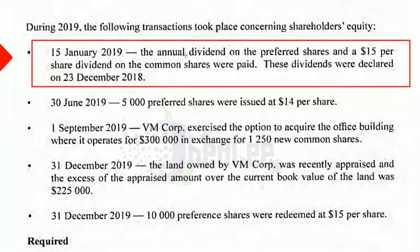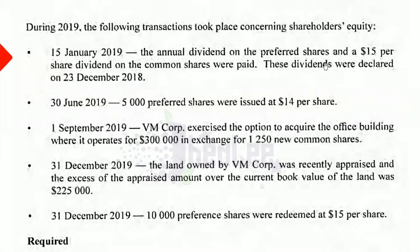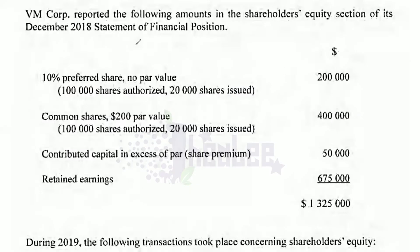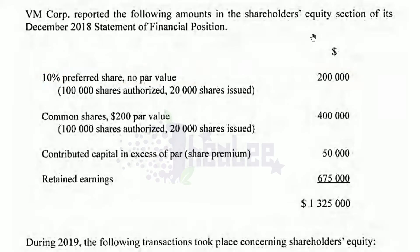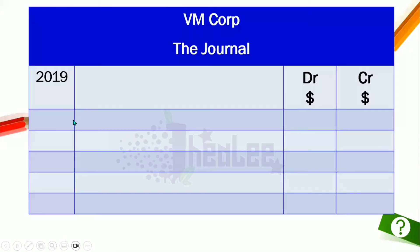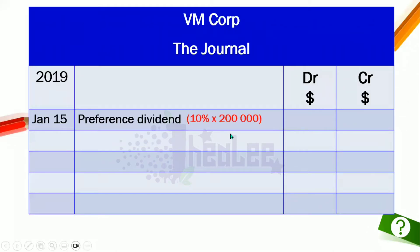Based on this, we pull information relating to the preference shares first. The preferred shares are 10%, no par, with a value of $200,000. This 10% indicates the dividend rate — the rate to be paid out on preference shares. Moving into the journal for January 15, the account to be debited is preference dividend. The calculation is 10% of $200,000, which gives us a value of $20,000.